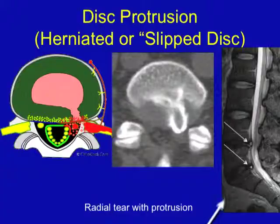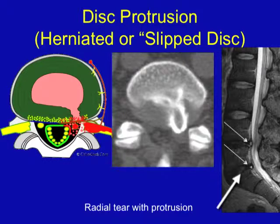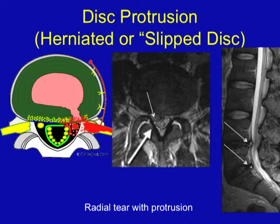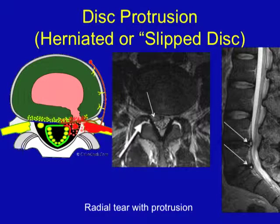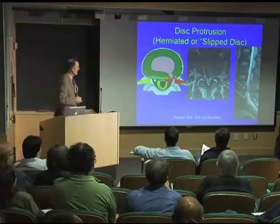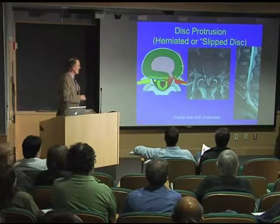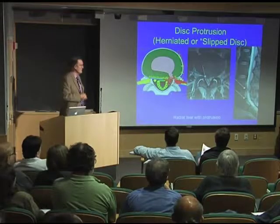So you may have these little bulges compressing a nerve and causing sciatica. Here's an example on MRI of a disc herniation that's certainly doing that, compressing a nerve before it exits the neuroforamen causing sciatica on the right side.